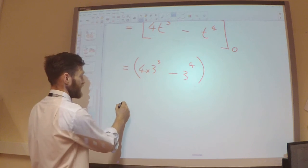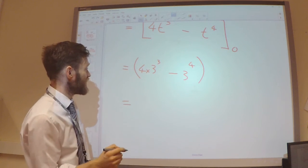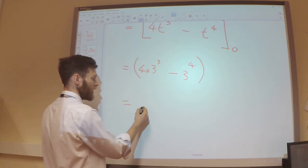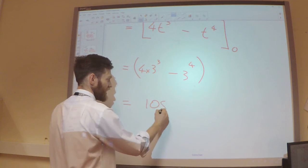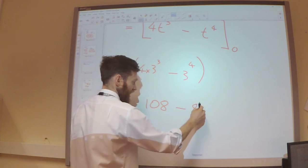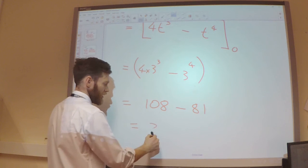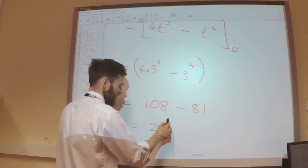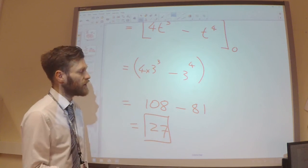And then finally, 3 cubed is 27 times 4, so it's going to be 108. 3 to the power of 4 is 81. So taking those away, the area underneath my curve is 27.